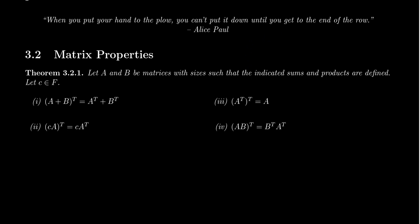Let's begin with the transposition map. Suppose A and B are two n by n matrices. It makes sense that we could add them together. What if you take A plus B and then take the transpose? It turns out that transposition distributes over matrix addition: (A + B)^T equals A^T plus B^T. The transposition operation switches rows to columns and columns to rows.